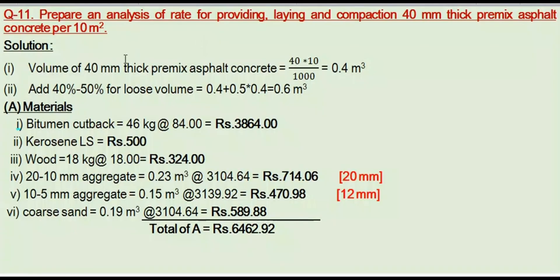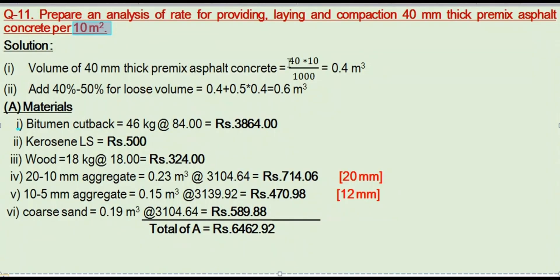Volume of 40mm thick premix asphalt concrete: surface area is 10 meters square, so the calculation is 10 m² multiplied by 40mm (i.e., 40 divided by 1000), giving us the finished volume.